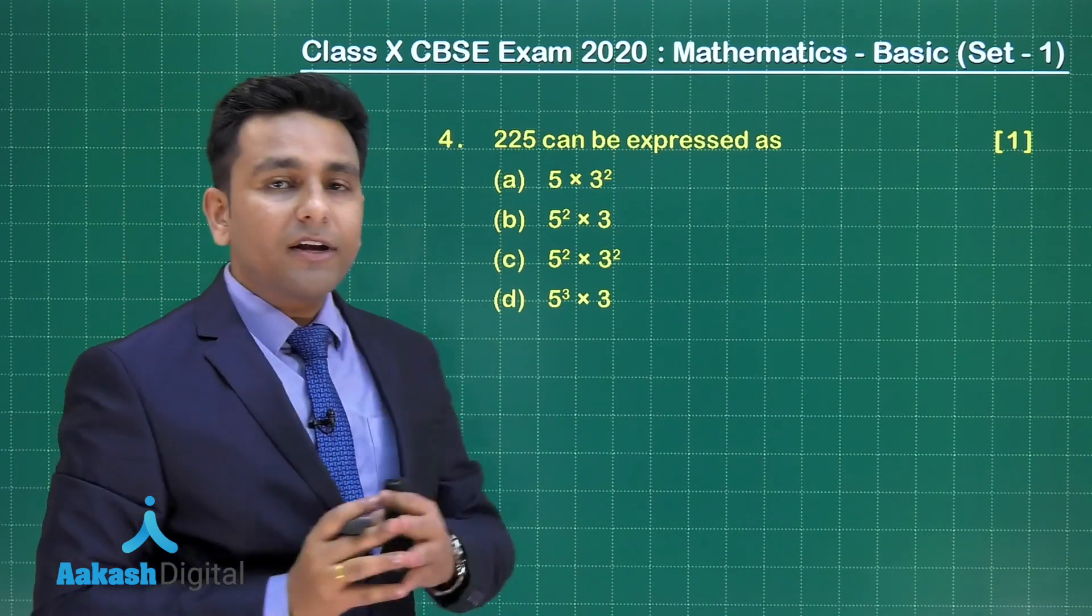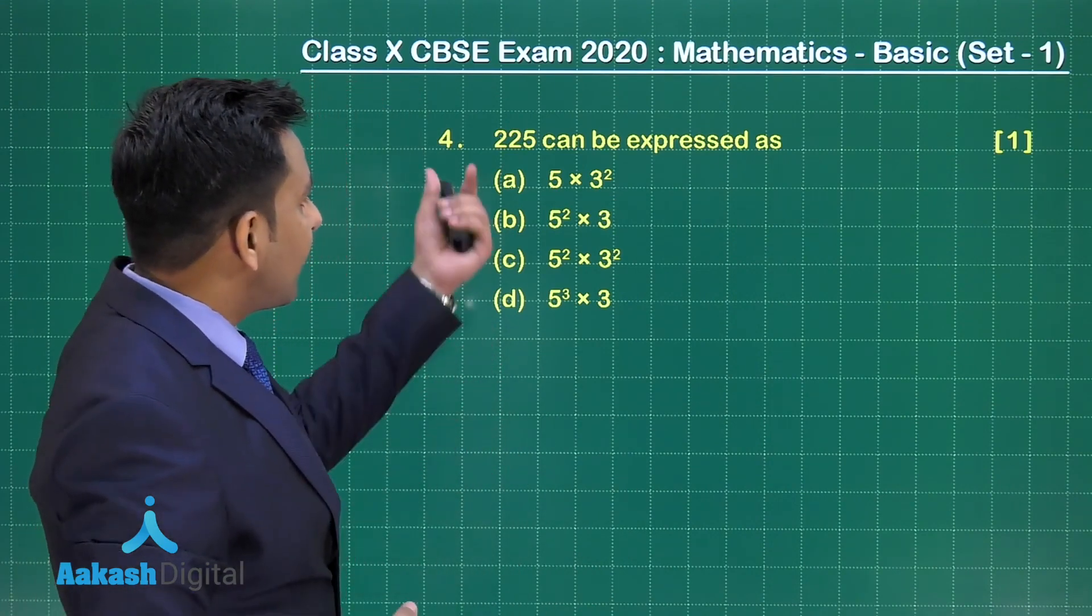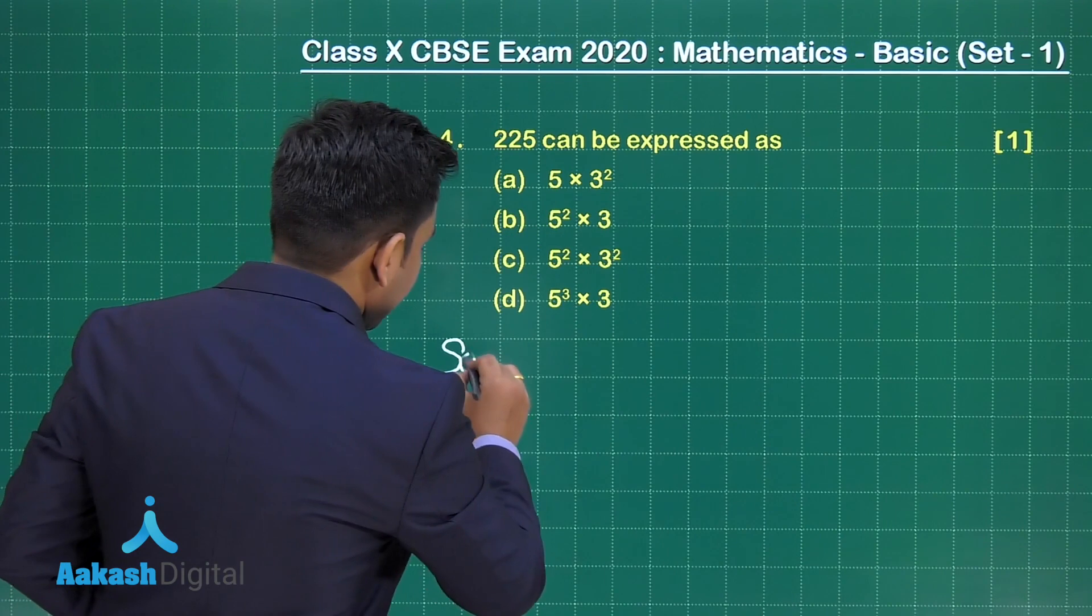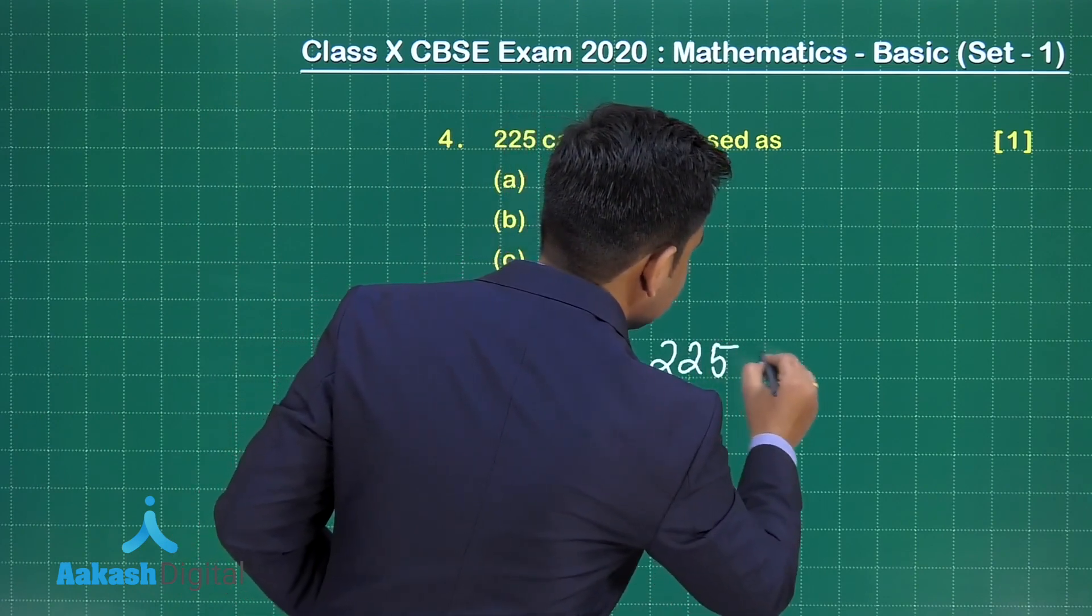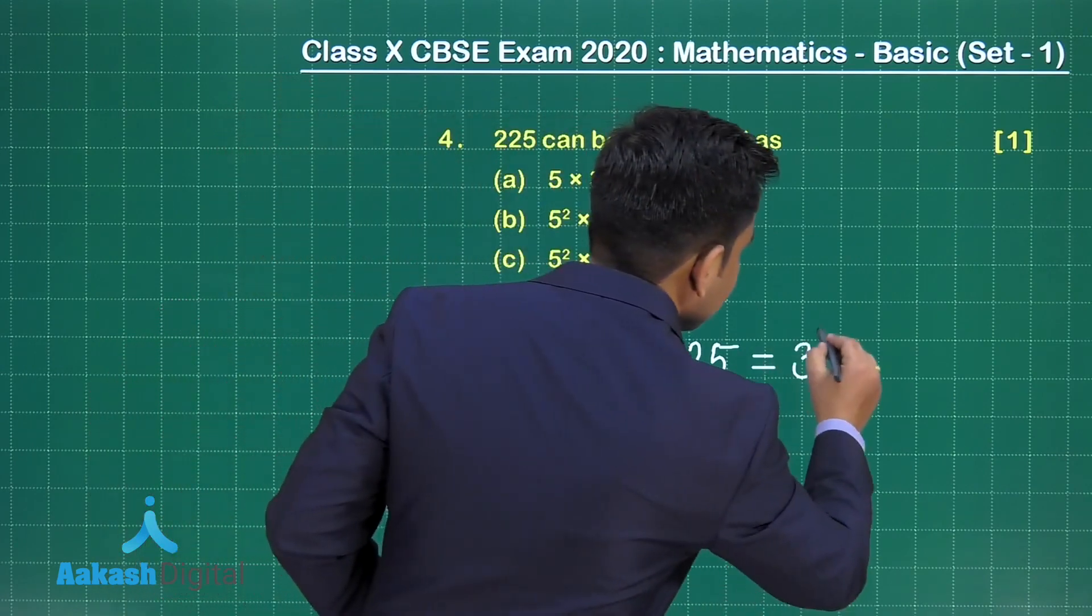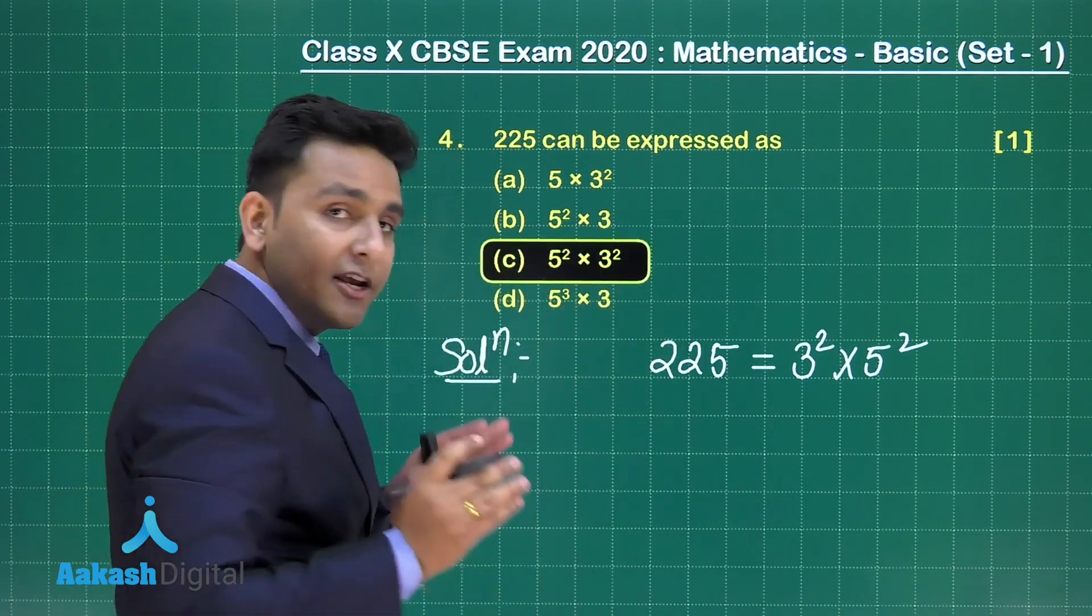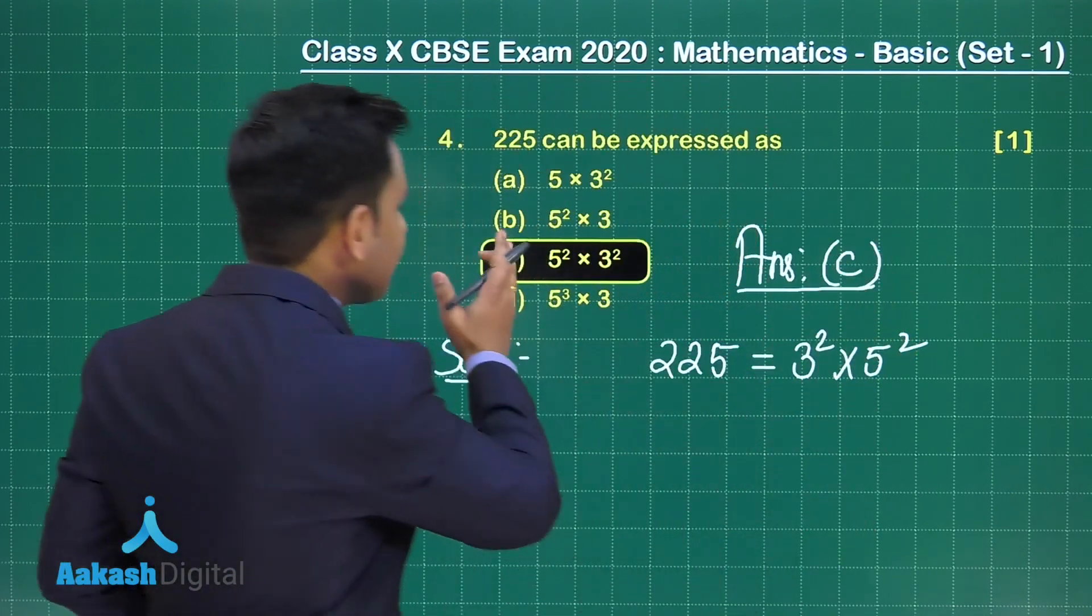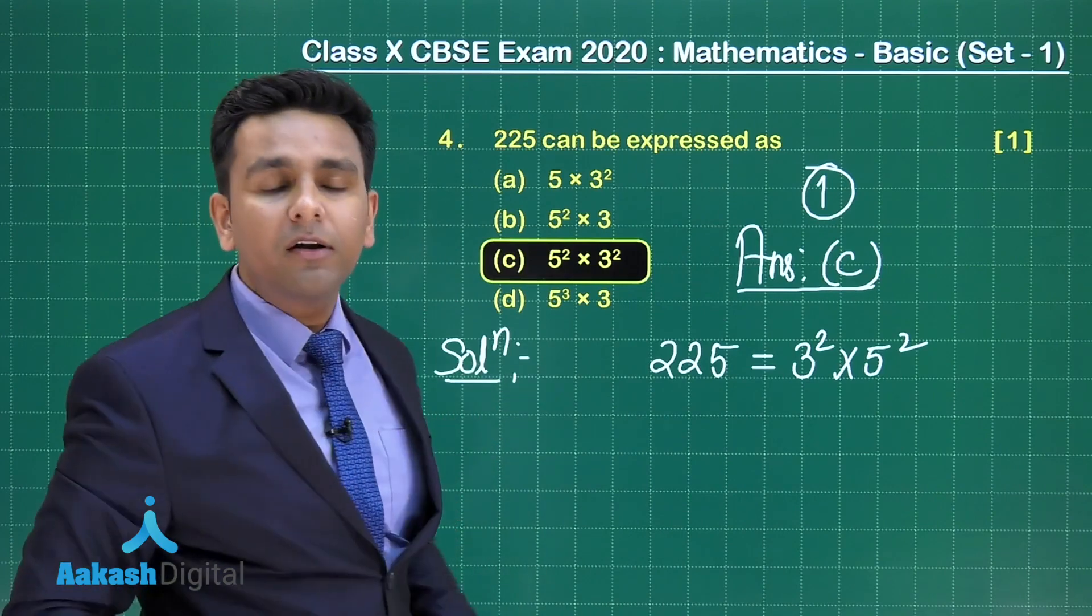This question is from chapter Real Numbers, but the topic is Fundamental Theorem of Arithmetic. Very simple and straightforward question. We have to represent this number as one of the given options. You know that 225 is a perfect square number. This can be written as 15 square. 15 can be factorized as 3 into 5. And we can write this equals 3 square multiplied by 5 square. Out of the given four options, option number C is the correct choice for this question. Answer is option C. If you have marked option C, then you can score again one mark for this question. Let us proceed to the next one.